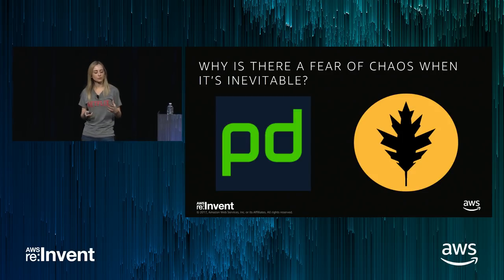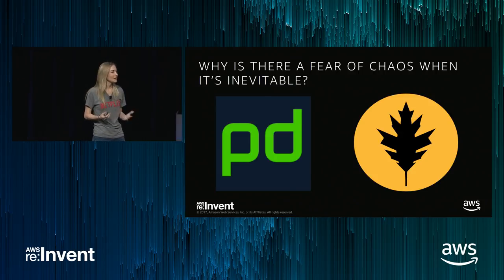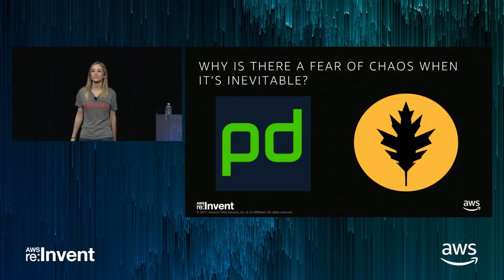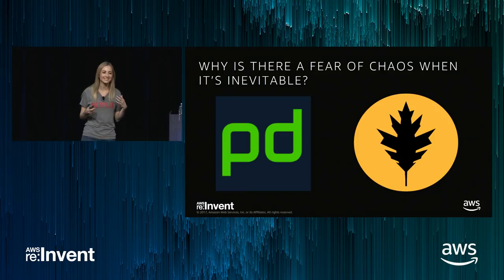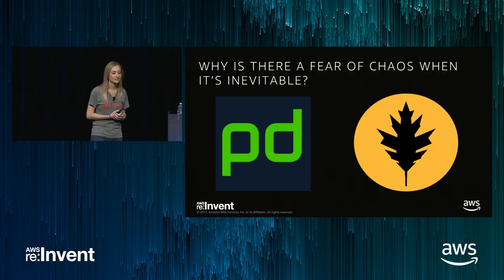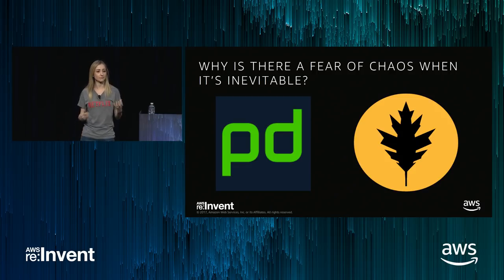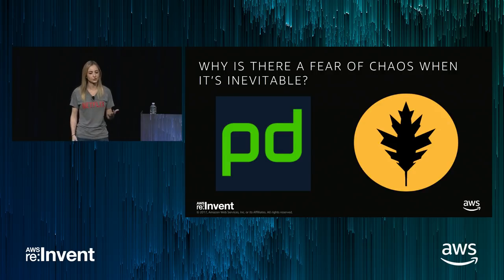Now that we understand a little bit what chaos is, there's still a fear behind it. But I argue, why is there a fear when chaos is inevitable? Companies literally exist to manage your incidents. Obviously we have a ton of incidents if there are companies whose sole purpose is to help us manage them. The chaos built into our systems is inherent. It's up to us whether we want to expose it before the customer does, so that we can deal with it and it doesn't turn into a pager at 2 in the morning.